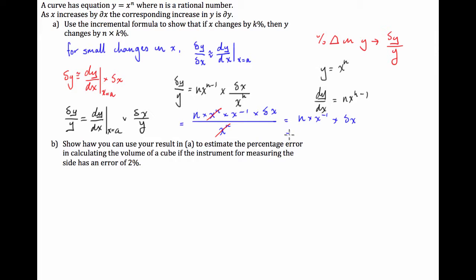If we had an addition or subtraction sign up in the numerator, we wouldn't be able to just randomly cancel stuff out like that. So what are we left with? We're left with n times x to the negative 1 times delta x. This x to the negative 1 we're going to put into the denominator. So this is going to be equal to n times delta x over x.